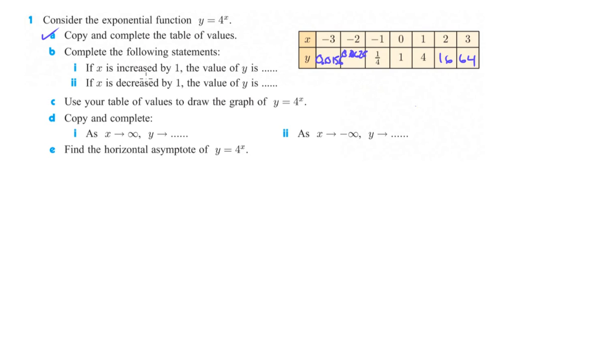Complete the following statements. If x is increased by 1, so as x is going up this way, what happens to y? So every time we're increasing by 1, I was at 1, we're at 4. And then to go to 2, we're up now to 16. And then to go to 3, we're up now to 64. If you'll notice here, y is being multiplied by 4.